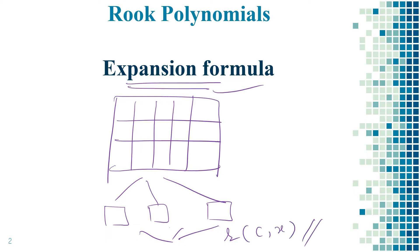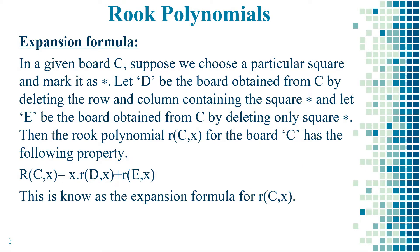To divide the boards we follow simple steps. In a given board C, we choose a particular square and mark it as asterisk. To explain this concept, let me consider a simple 2×2 board. The first step is to mark any square of our choice as the asterisk symbol — it could be the first, second, third, or fourth position.